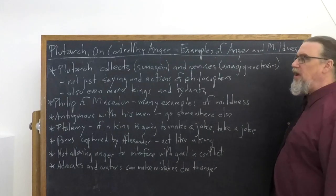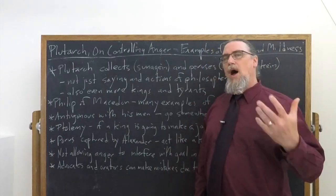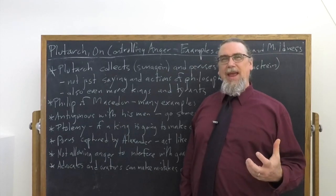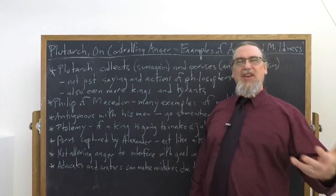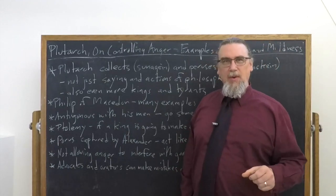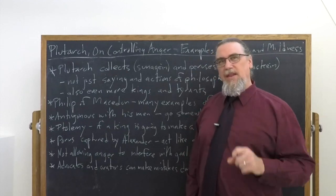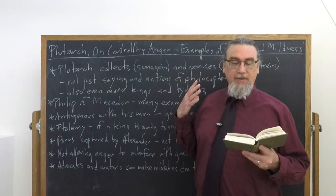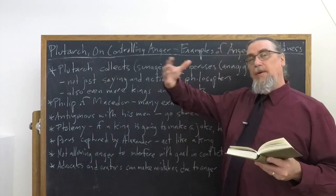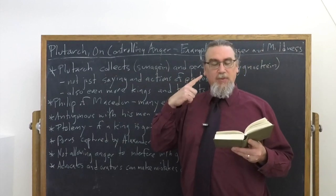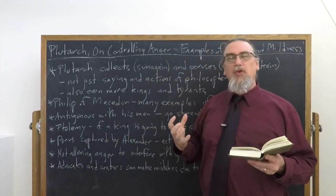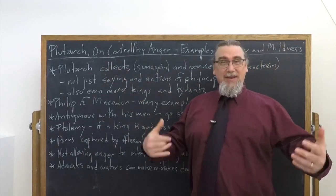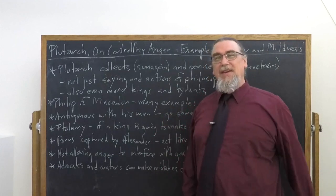The last thing that he talks about in terms of real life examples, orators and advocates need to avoid getting angry because they become ineffective. They make mistakes in their task of using language to convince when they allow themselves to get angry. So he brings up this guy, the friends of Satyrus, the Samian, when he was going to plead a case would stop up his ears with wax. So he wouldn't screw things up by getting angry at the insults of his enemies saying things while he's trying to present his case.